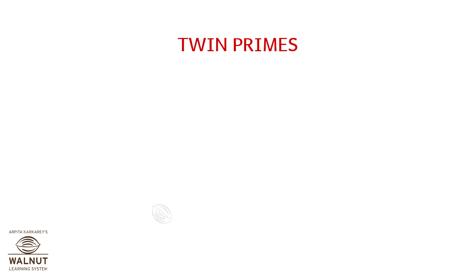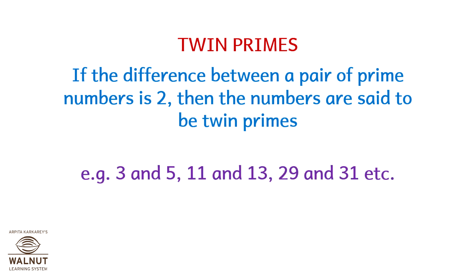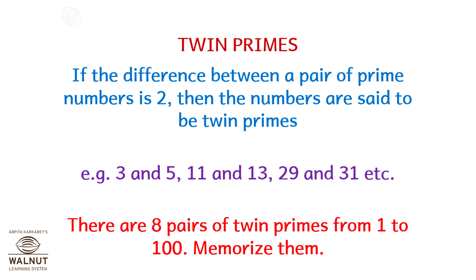Let's look at twin primes. If the difference between a pair of prime numbers is 2, then the numbers are said to be twin primes. Examples: 3 and 5, 11 and 13, 29 and 31, etc. There are 8 pairs of twin primes from 1 to 100 — memorize them.